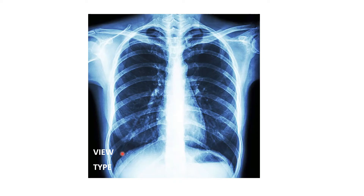In the AP view, there is significant magnification of the heart size and the mediastinum due to venous distension. So we take the PA view over the AP view for accurate cardiac size assessment. The third thing you have to describe is the region — this is the chest or thorax region.